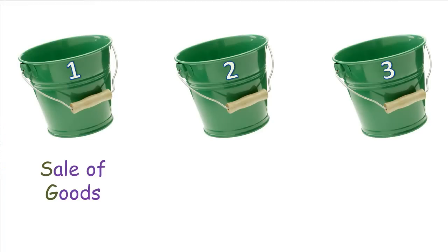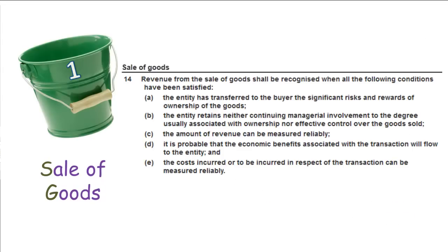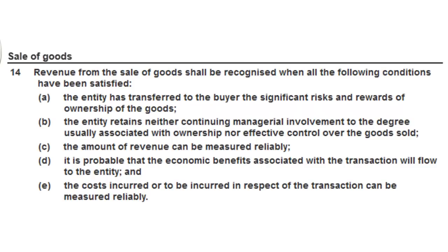Bucket number 1 is for revenues generated from the sale of goods. Bucket number 2 is for revenues generated from the sale of services. Bucket number 3 is reserved for revenues associated with income generated from letting others use our assets — think leasing, lending, or licensing, for example. Each of these buckets has specific criteria that need to be considered, and you need to understand these criteria well and reference them in your analysis.